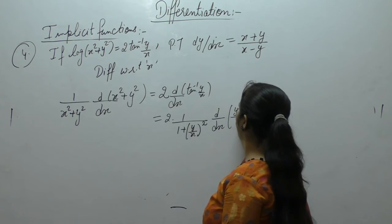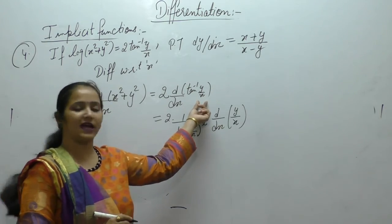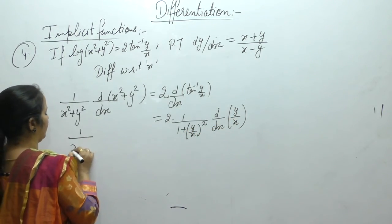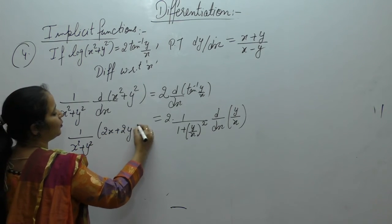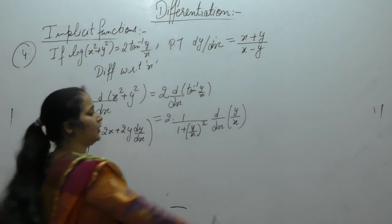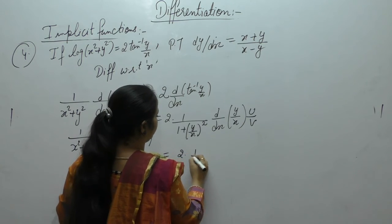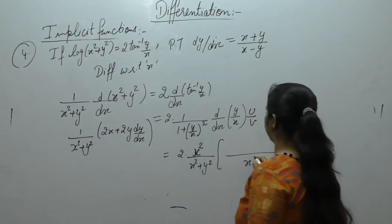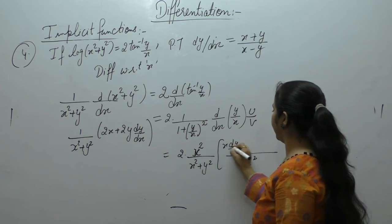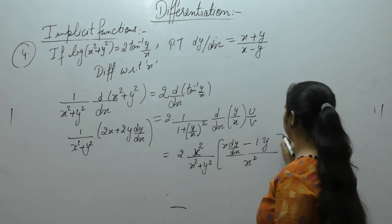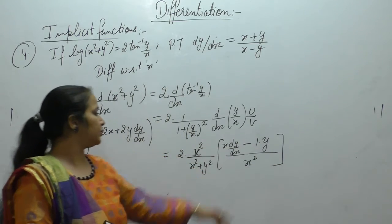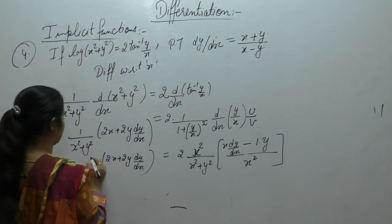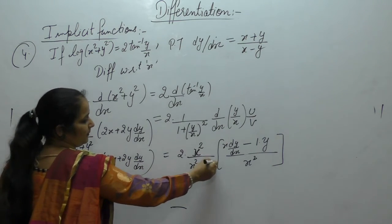Then take the derivative of y/x using the u/v quotient rule. On the left side we get (2x + 2y·dy/dx)/(x² + y²). On the right side we get 2·[1/(1 + (y/x)²)]·[(x·dy/dx − y)/x²]. Simplifying 1 + y²/x² = (x² + y²)/x², so the factor becomes x²/(x² + y²), giving 2(x·dy/dx − y)/(x² + y²).